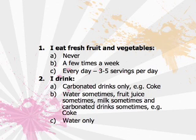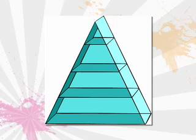Number 2: I drink carbonated drinks only, for example Coke. Or B: water sometimes, fruit juice sometimes, milk sometimes, and carbonated drinks sometimes, for example Coke. Or C: water only. Have your healthy food choices improved? I hope so. You will need to use your journal to reflect on whether you have been able to maintain a healthy and nutritious diet. Complete section 2 of your report, showing your planned food pyramid and commenting on whether you have managed to stick to your plan.